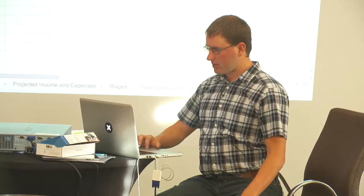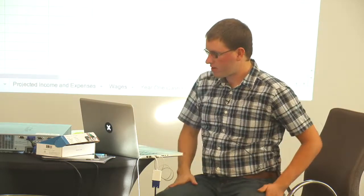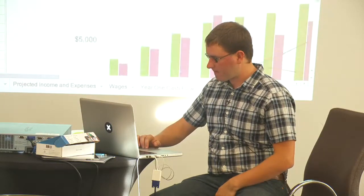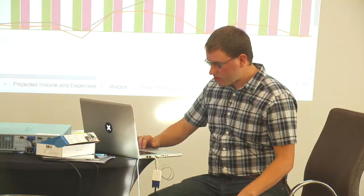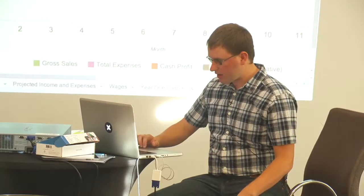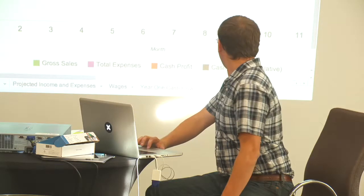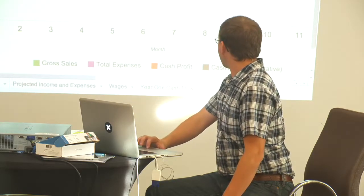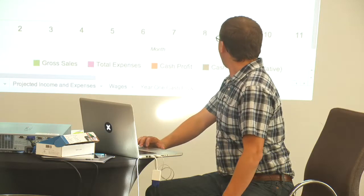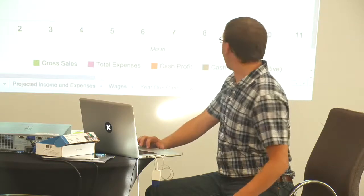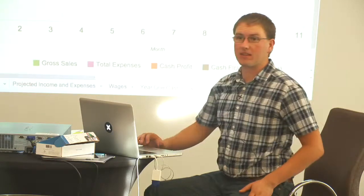The chart loaded. So the green is your gross sales, pink is your expenses, red is your monthly profit, and black is your cumulative cash flow — the amount of money you have. You can see that at month four we basically run out of money. That's probably bad, because even though sales are going up, you're never going to get to month five if you run out of money.